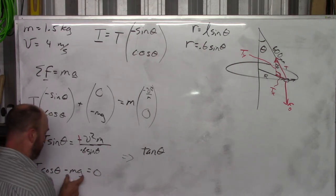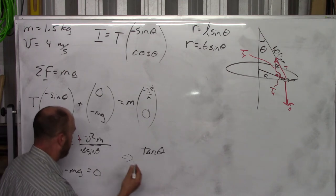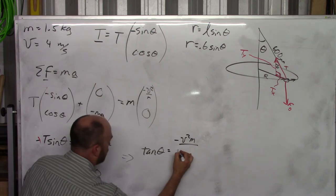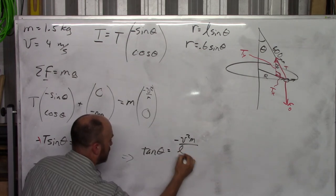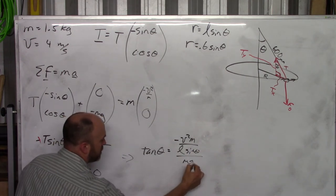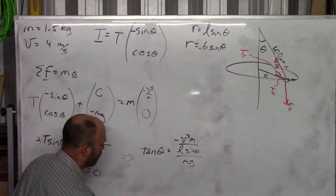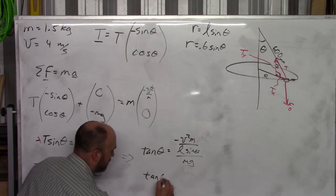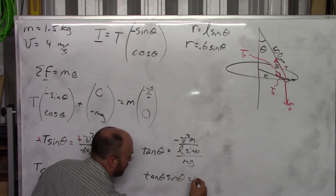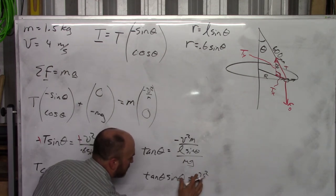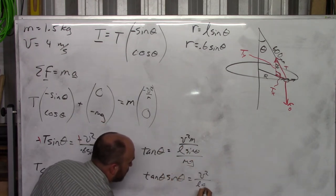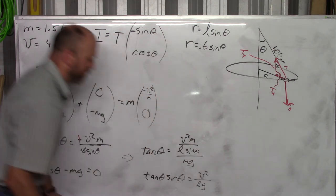And then on the right side, we're going to move this mg over here. So we're going to have negative v squared times m over 0.6. I'm going to write L. L sine theta divided by mg, which means that you have tan theta times sine theta equals v squared over lg. And then you've got to get theta out of that.